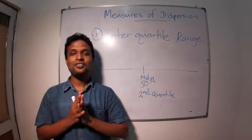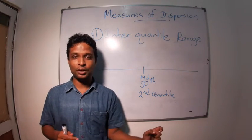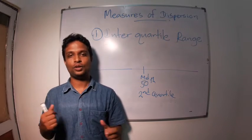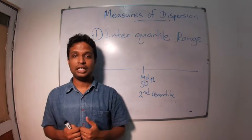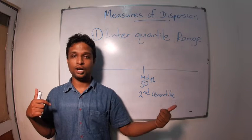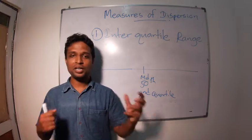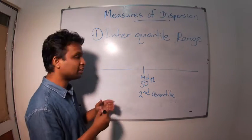In range, we measure the dispersion using the smallest value and the largest value. And we came to know that if the smallest value and largest value are outliers, we overestimate the distribution. To avoid that we have another quartile.